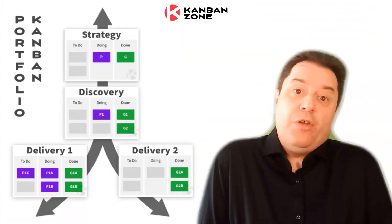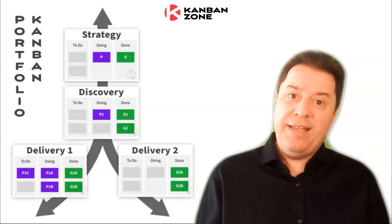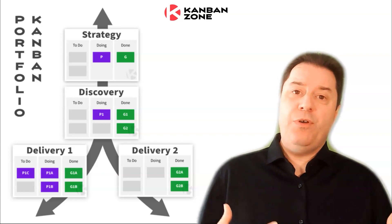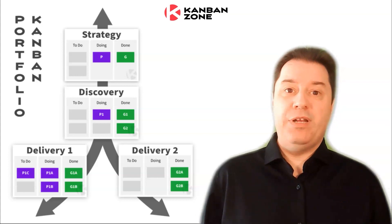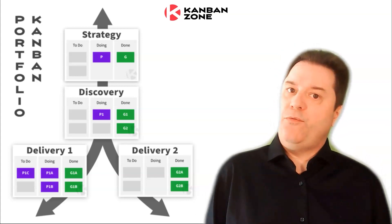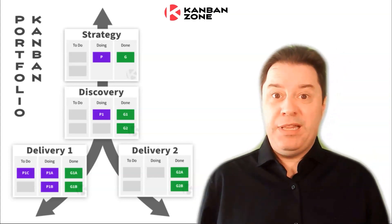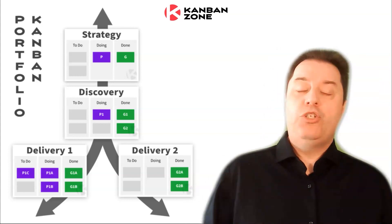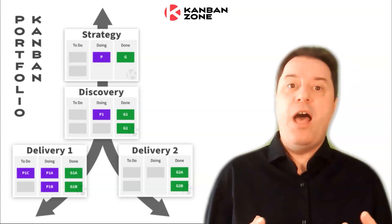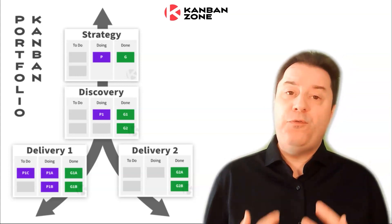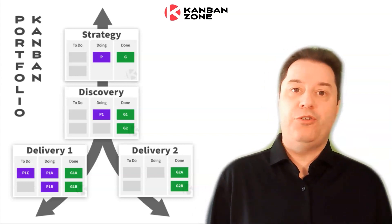We are back looking at the original three flight levels of a portfolio Kanban system, and you now know how these flight levels work with each other. The key is to understand that all the work you do answers the three main voices in your organization: at the strategic level, the voice of why — why are we doing this work? At the discovery level, what is the work? And at the delivery level, how to actually produce this work. I sure hope you enjoyed this short presentation. We would love to help you design your own and help you flow your work efficiently across your organization. Welcome to the Kanban Zone — we sure hope to talk to you soon.